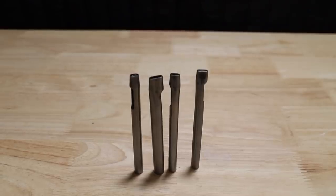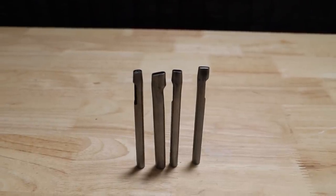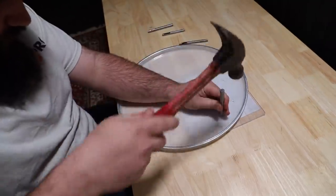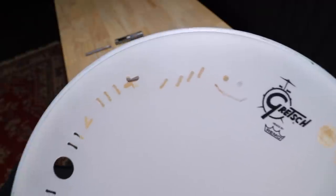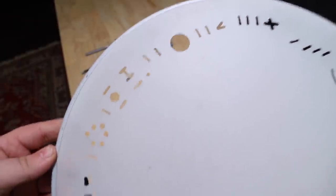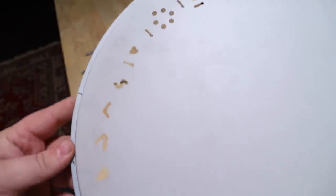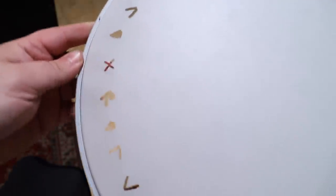Now, before I send these back to Sounds Like a Drum, I found these oval punches. So let's grab an old head and make some funky shapes for them. That should be interesting.